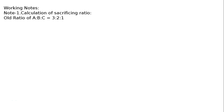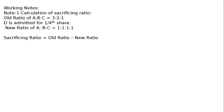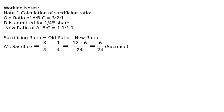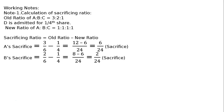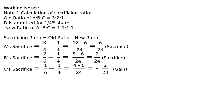New ratio as per adjustment point D: D is admitted for one-fourth share, and the new ratio of A to B to C to D is equal to 1 to 1 to 1 to 1. Sacrificing ratio equals old ratio minus new ratio. A sacrifices: 3/6 minus 1/4 equals 6/24. B sacrifices: 2/6 minus 1/4 equals 2/24. C's old share is 1/6 and new share is 1/4, giving minus 2/24, meaning C gains.